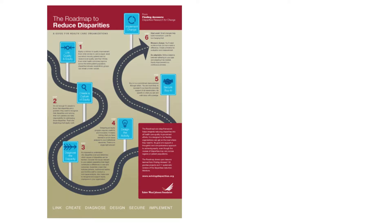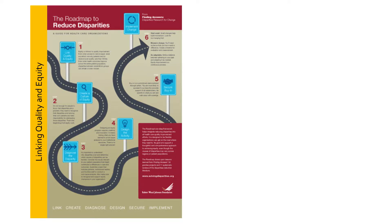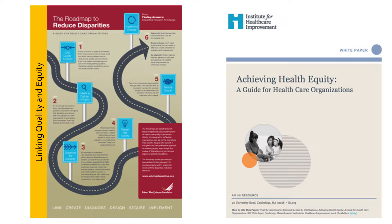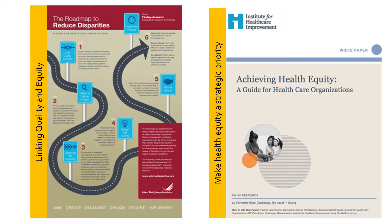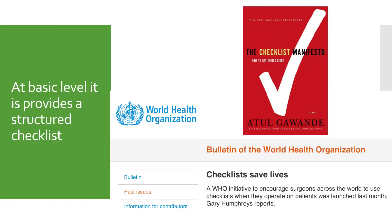Let's consider why we need the Equity and Empowerment Lens. In reviewing the Robert Wood Johnson Foundation's Roadmap to Reduce Disparities, their primary tenet is linking quality and equity. Similarly, the Institute for Healthcare Improvement insists on first making health equity its strategic priority. However, those of us who champion health equity work often see that if we are not at the table, health equity falls off the table, most often unintentionally. At a very basic level, the Equity and Empowerment Lens provides a structured checklist to help keep health equity on the table, and we know that checklists have literally saved lives in our operating rooms and other health care settings.